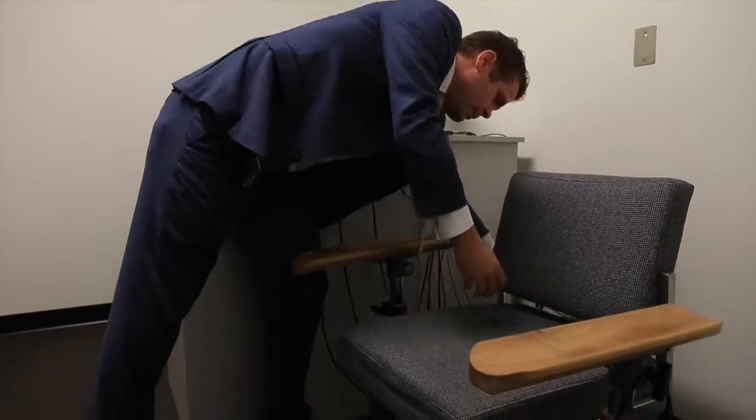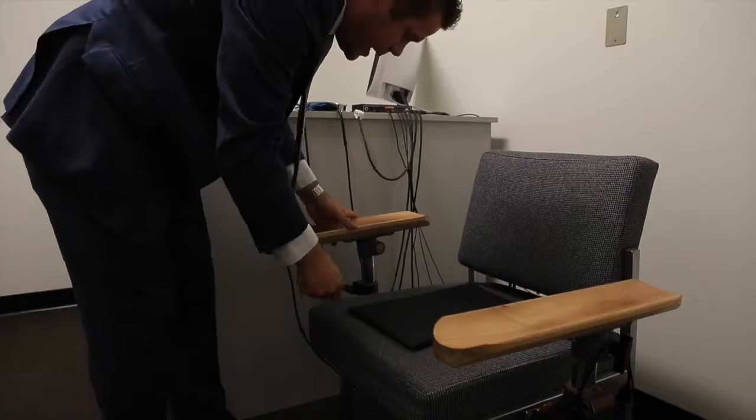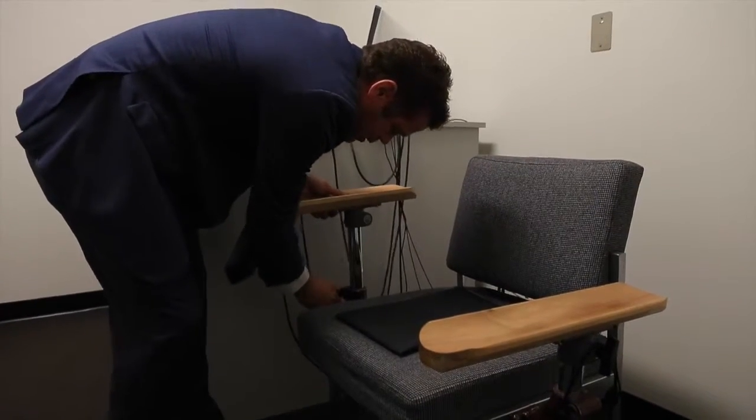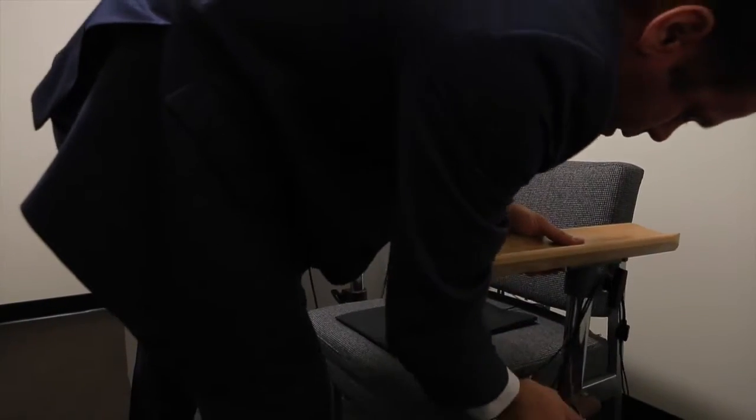The setup for a polygraph begins with the chair. A motion sensor is placed on the seat to measure any movement during the interview, and the armrests are placed at a natural height.